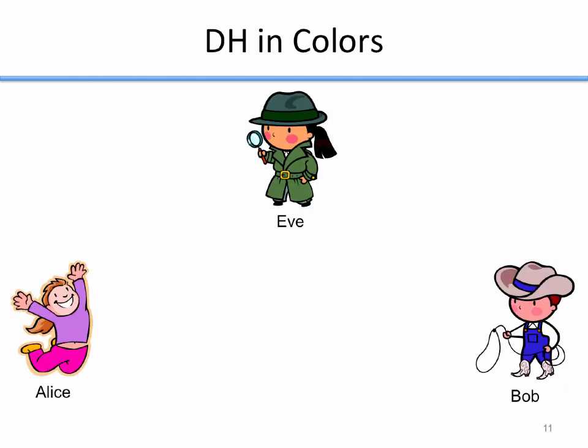Diffie-Hellman is based on some complex mathematics — not too complex, we'll look at them later. But in order to give you the idea first, we're going to start by describing it using colors, paint specifically, and then we'll look at the mathematics. So here's how the protocol would work if we were doing it with paint. Instead of Alice and Bob trying to come together to form a secret key, they're going to try to form a secret color, and Eve's job is to figure out what color Alice and Bob have agreed upon in secret.